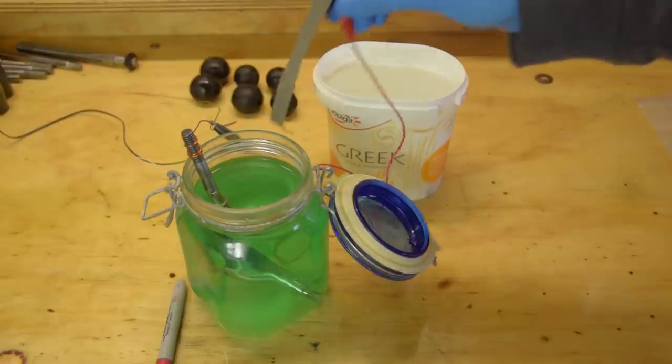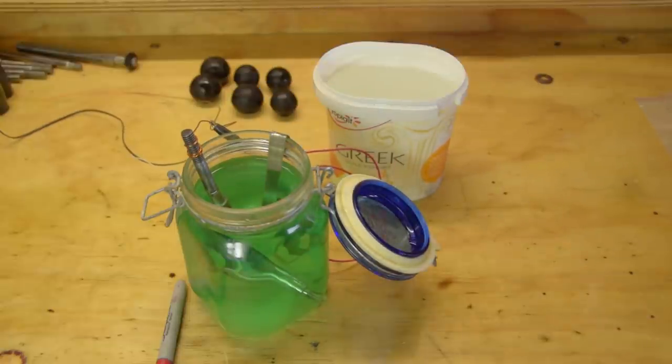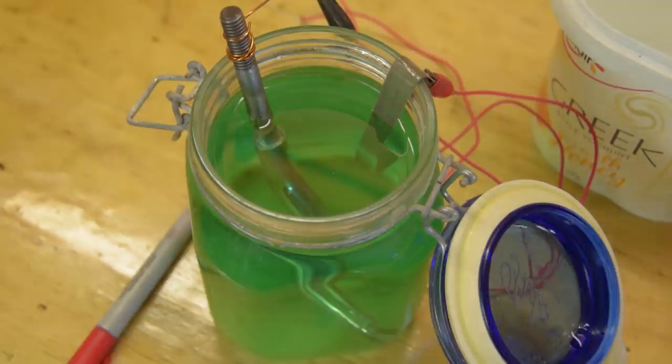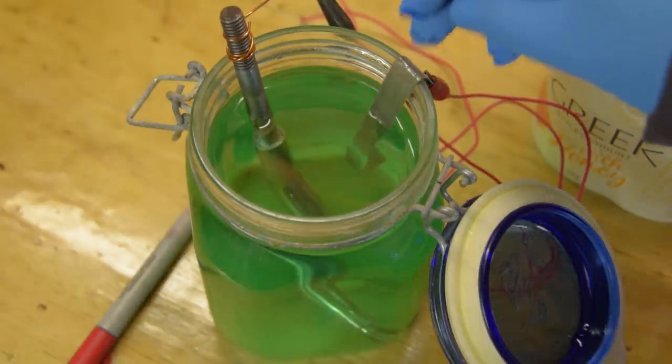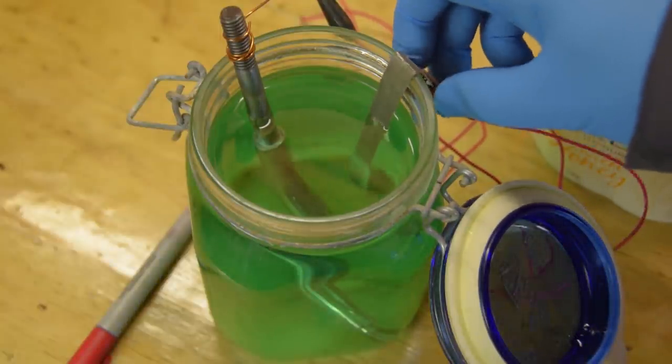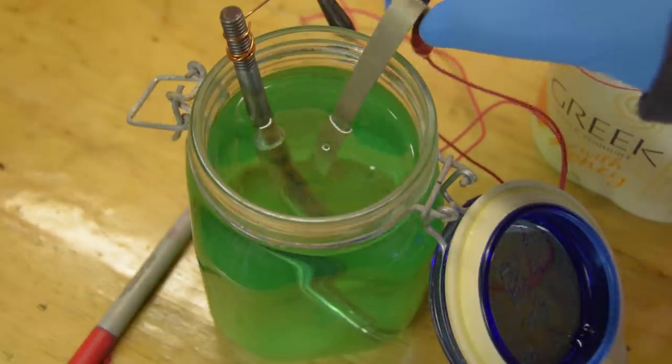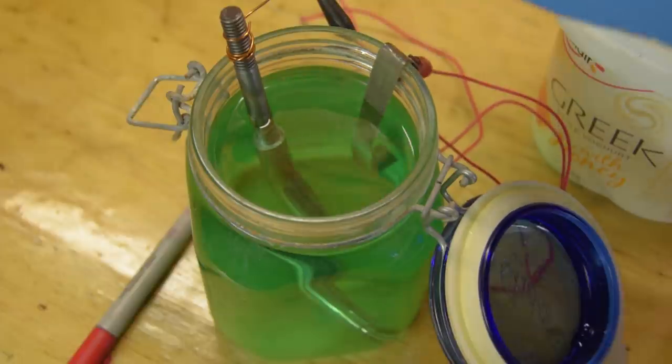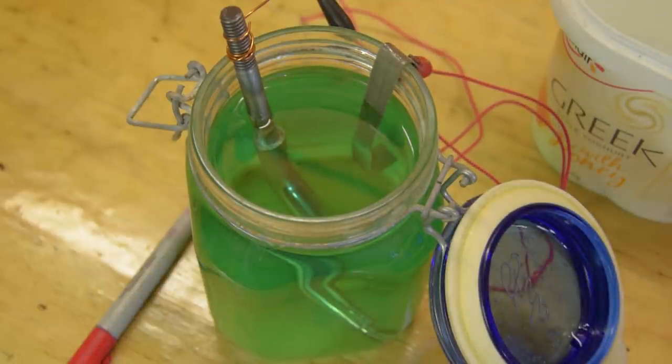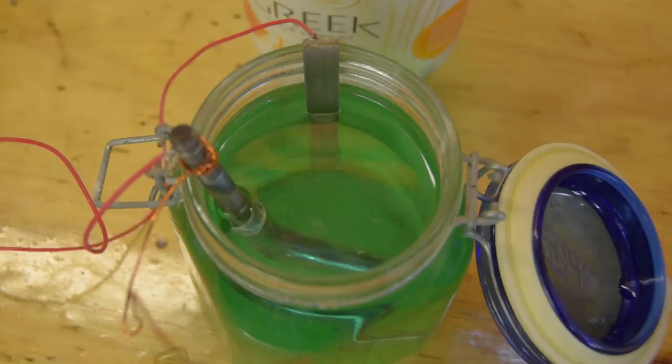It's a pretty simple setup. Positive on the anode and negative on the piece you want to plate. And bubbles. After a bit of troubleshooting, it turns out that my piece of copper wire is insulated. That's why nothing was happening. Let's try that again.